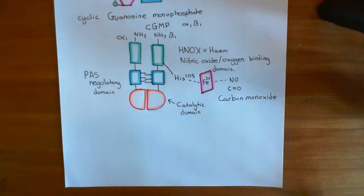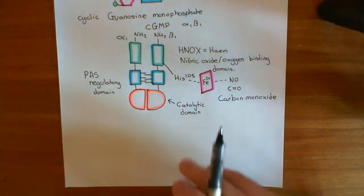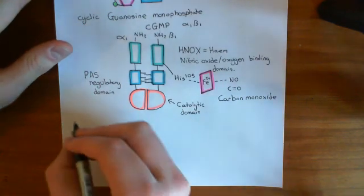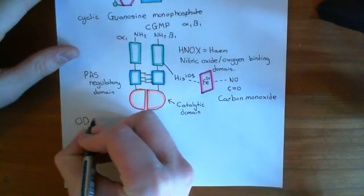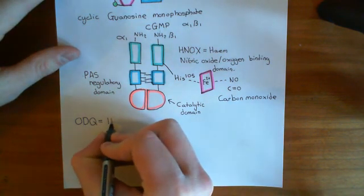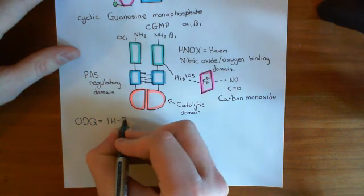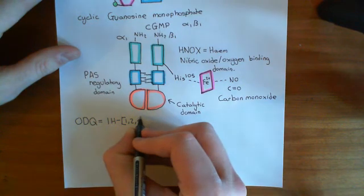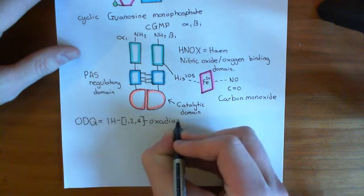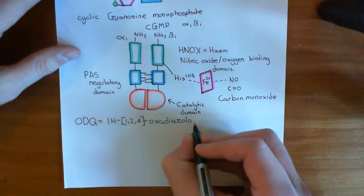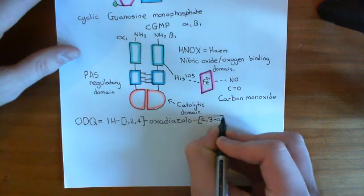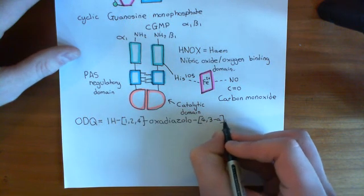Now what we want to discuss is pharmacological agents that can interact with soluble guanylate cyclase. The main one is something called ODQ, which stands for 1H-1,2,4-oxadiazolo[4,3-a]quinoxalin-1-one. I'm going to show you the structure of this and then explain the logic that goes into naming it.